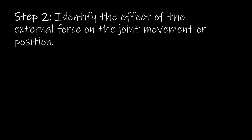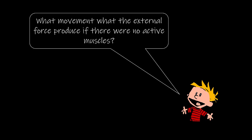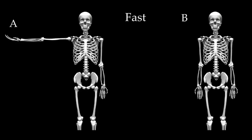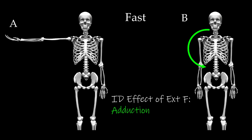Step 2 is to identify the effect of the external force on the joint movement or position. We ask ourselves: what movement would the external force produce if there were no active muscles? Looking at A to B fast, we see that gravity wants to downwardly rotate the humerus — in this case, in a counter-clockwise direction. The effect of the external force is again glenohumeral adduction in a counter-clockwise direction.